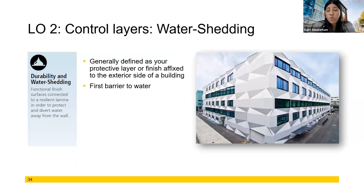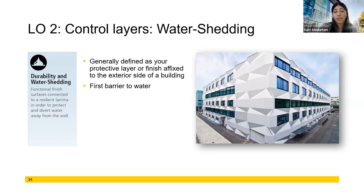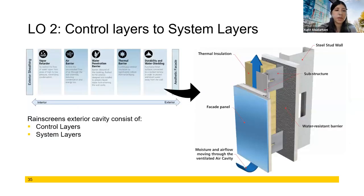And finally, we have our durability and water shedding layer — a fancy way of saying cladding. It should be beautiful, win you tons of awards, and be the first line of defense for the building. So it needs to be waterproof, impact resistant, and serve whatever purpose is necessary for your specific project — for example, an airport terminal versus a school will have very different performance requirements for their cladding. Now we're going to back it up to the substrate and go through this as a rain screen system, where some of the control layers will be augmented or have additional layers added on.